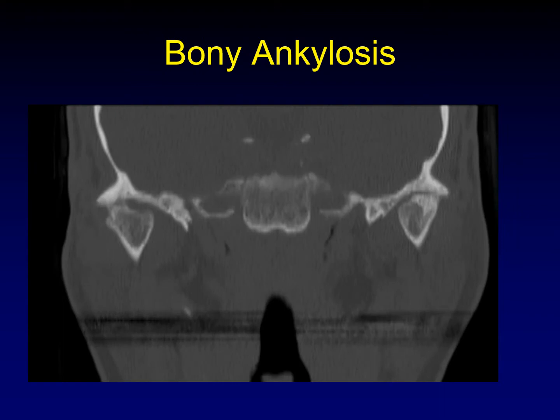Bony ankylosis occurs in severe degenerative disease. You really need to assess this on coronal or sagittal planes because it's very hard to appreciate in the axial plane. You can see here there is a bony bridge between the glenoid fossa and the condylar head, actually on both sides. You can also get fibrous ankylosis of the joint, which can often be seen on T2 and T1 weighted images on MRI.